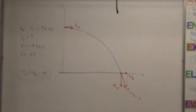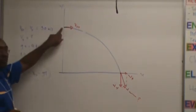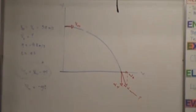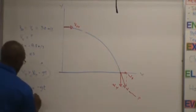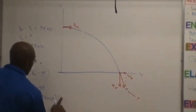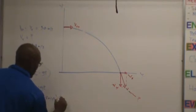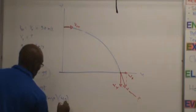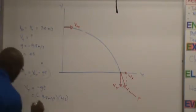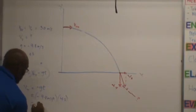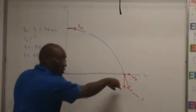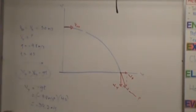How about this one? What's V0y up here? V0 is zero. So Vy equals negative 9.8 meters per second squared times 4 seconds, which gives us negative 39.2. And it makes sense, right? This is going down. So that's Vy.